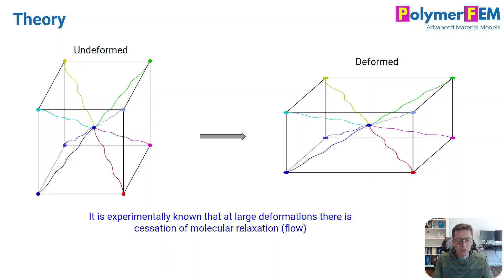The idea that they came up with was to say that from experiments we know, was their argument, we know that at large deformations the amount of molecular relaxation in these polymers actually goes down at large deformations. The relaxation goes down, there's less of a flow, there's a cessation of the molecular flow in that case. And how would we model that?